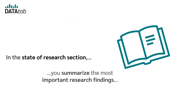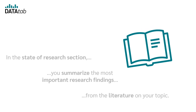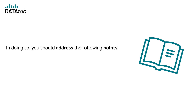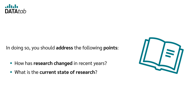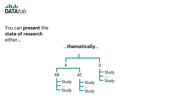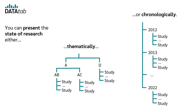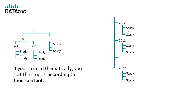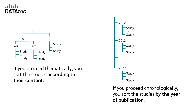In the state of research section, you summarize the most important research findings from the literature on your topic. You should address the following points: how has research changed in recent years? What is the current state of research? What is the direction of research right now? And how does your work fit into the state of research? You can present the state of research either thematically, sorting studies by their contents, or chronologically, sorting studies by their year of publication.